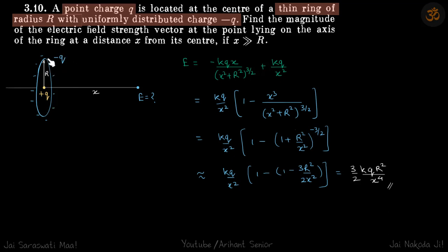We are given a ring of negative charge minus q, and at the center of the ring we have put a positive charge of same magnitude. We need to find what is the field at a distance x if x is much much greater than r.